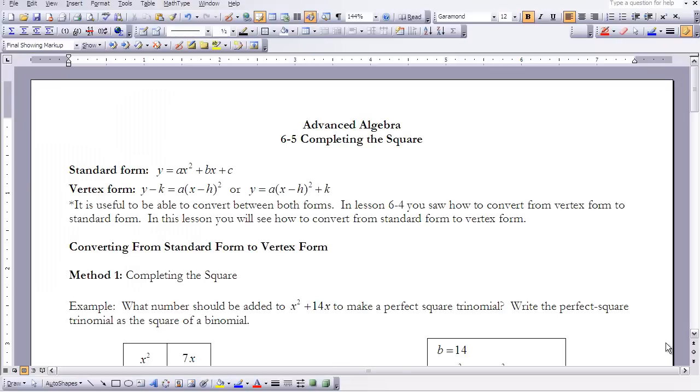This is Advanced Algebra Lesson 6-5, Completing the Square. In previous lessons, we talked about the various forms of a quadratic and how we could take an equation in vertex form and make it into standard form. In this lesson, we're going to convert from standard form to vertex form without graphing. We're going to explore two methods.